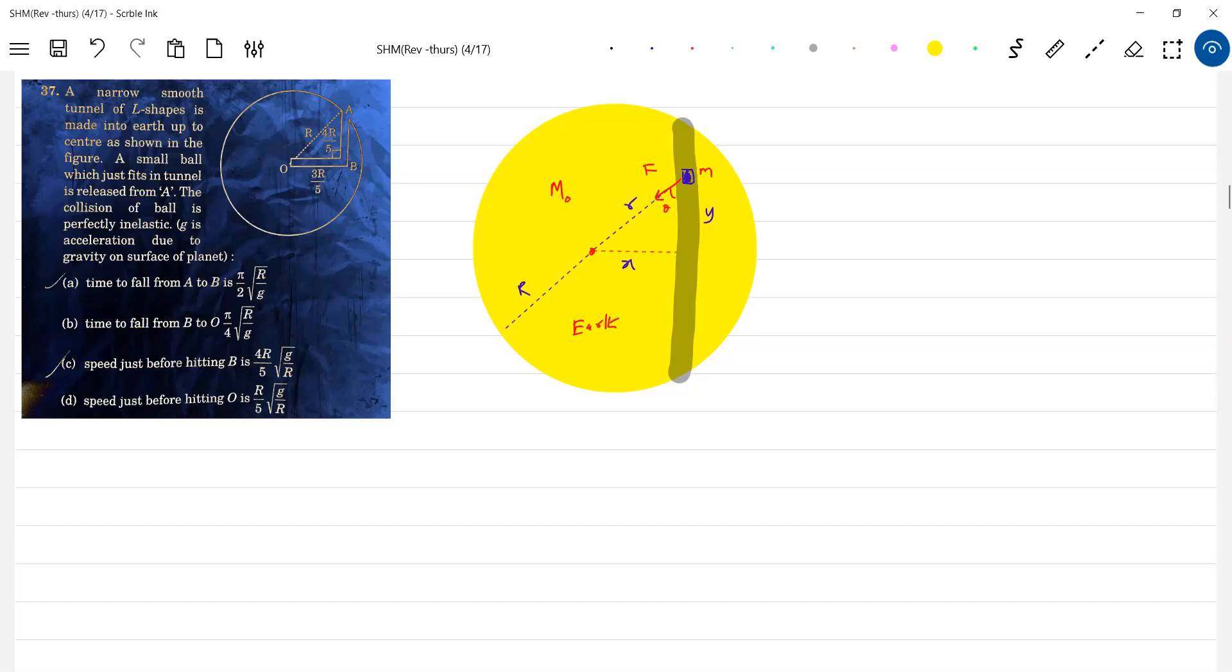That is what we are going to prove. Then what is the acceleration? ma should be equal to f cos theta. What is f? m into e into cos theta. The gravitational field at the m will get cancelled.